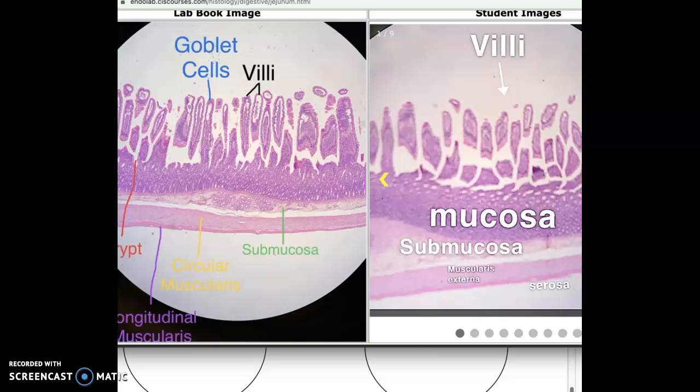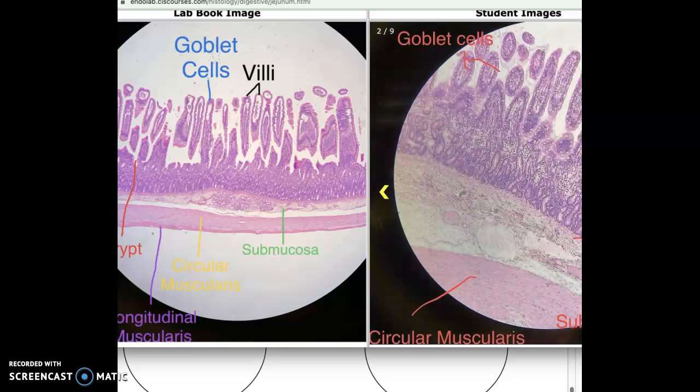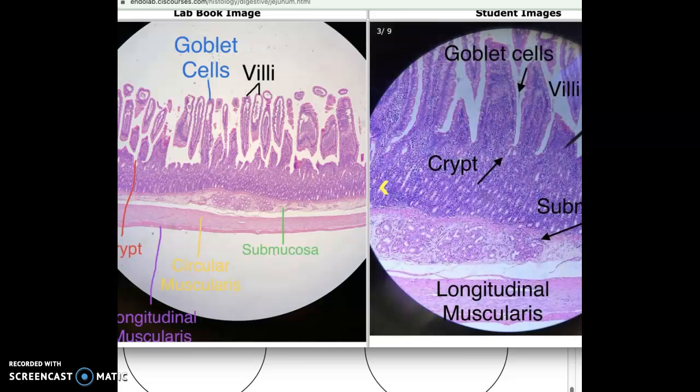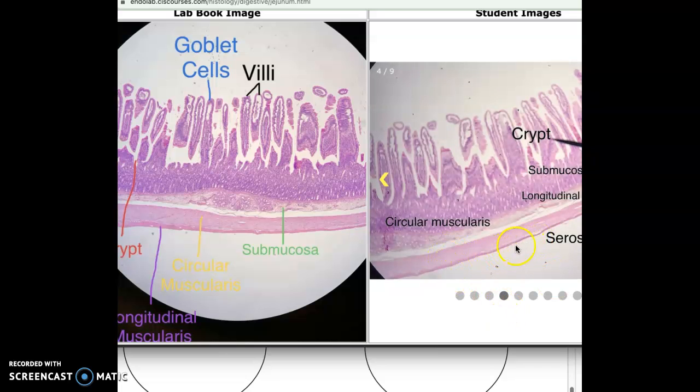So this is what you are drawing on the low power one. This is actually a nice one. And so the serosa layers here, they didn't really label it.